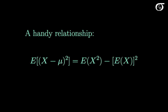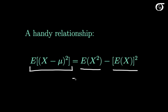Here's a handy relationship, useful both for calculations and for theoretical work. The expression E[(X minus mu) squared] — if we square it out and carry the expectation through — can be shown to be equal to E[X²] minus (E[X])². Another way of writing this is E[X²] minus mu squared.